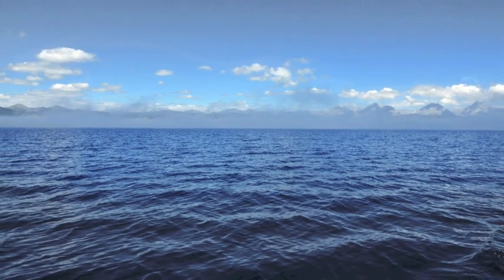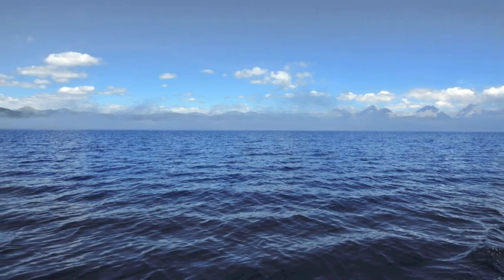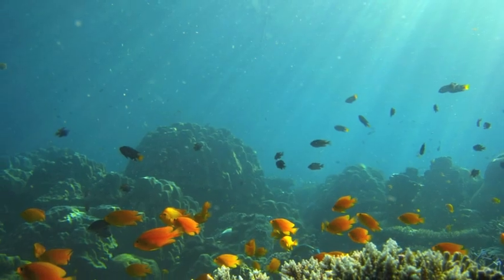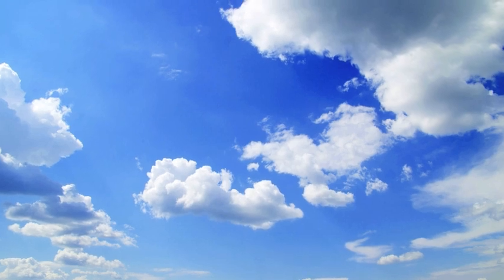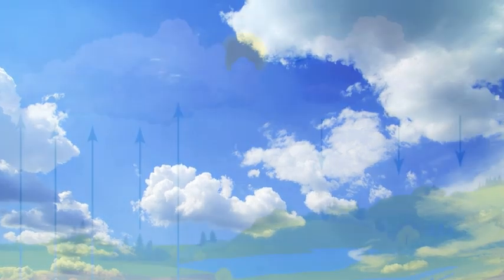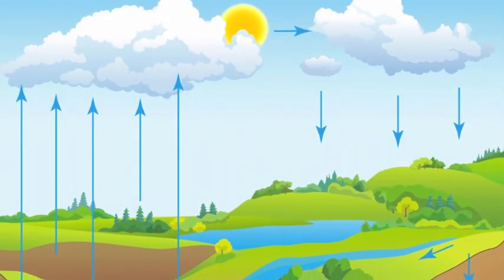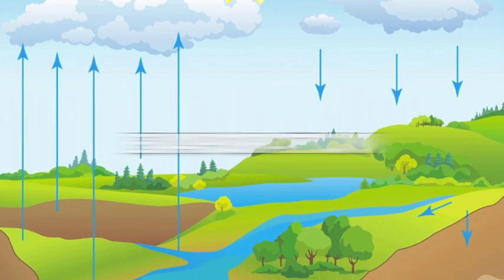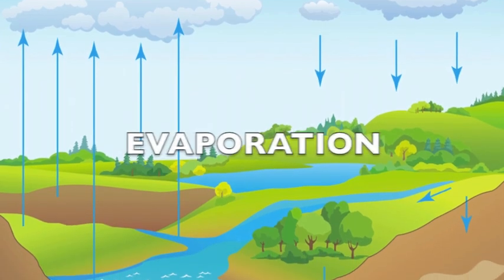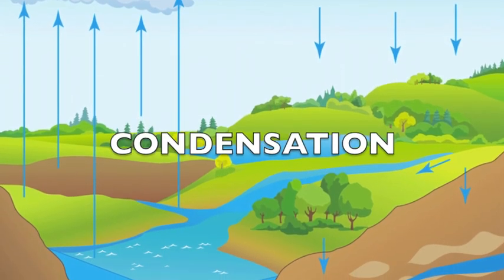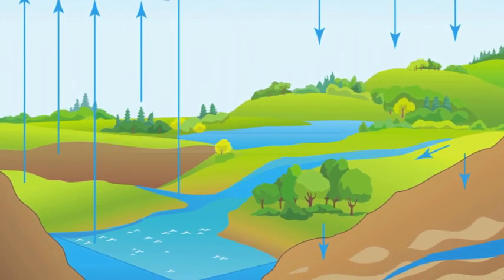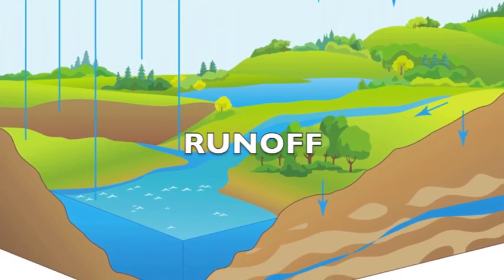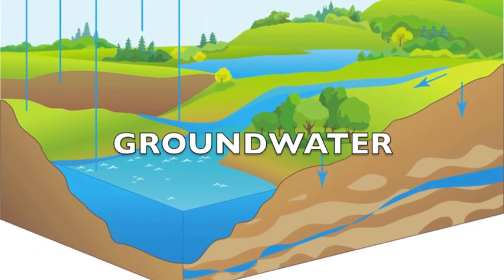The hydrosphere contains all the saltwater and freshwater on, under, or above the surface of earth. Fresh water exists in a fixed amount in a hydrologic cycle: evaporation, condensation, precipitation, runoff, and groundwater.